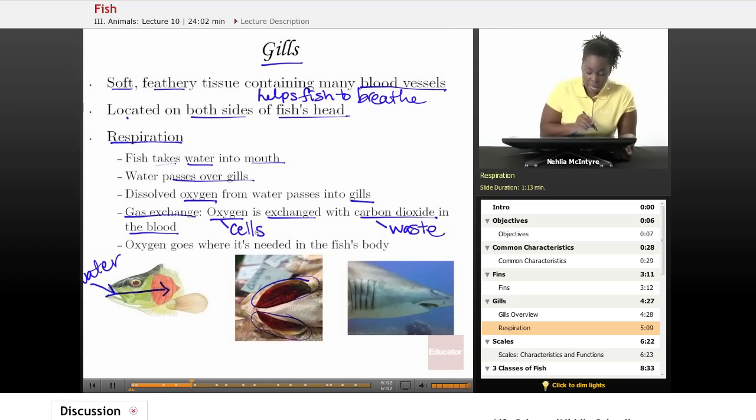So as the oxygen goes over the gills, gas exchange occurs, and then the oxygen goes where it's needed in the rest of the fish's body. Here is a picture of the shark gills here. Obviously, because the shark is such a large predator, it needs very large gills in order to survive.